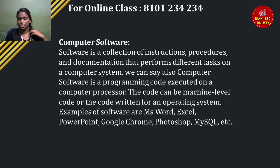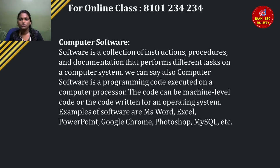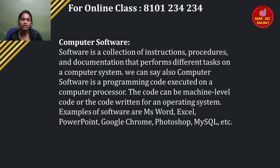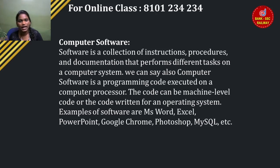We use apps. Microsoft Word, Excel, etc. — this is all software. Computer software is programming code executing on a computer processor. The code can be machine level code, and it is written on an operating system (OS). Examples of software: MS Word, Excel, PowerPoint, Google Chrome, Photoshop, MySQL.